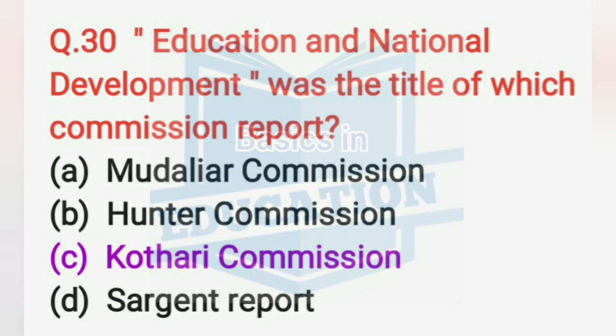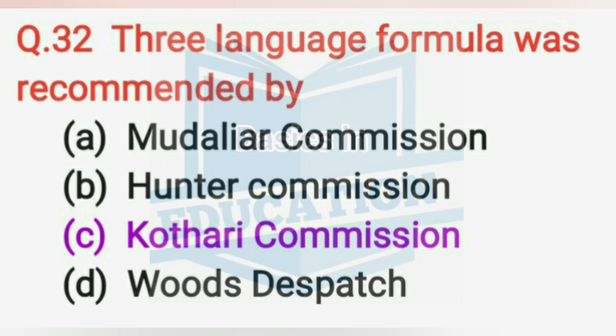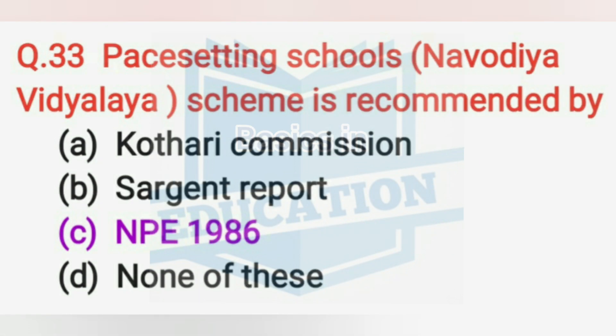'Education and National Development' was the title of the Kothari Commission report. The Secondary Commission was inaugurated on 6th October 1952 by Maulana Azad. The three-language formula and Pace-Setting Schools — the Navodaya Vidyalaya Scheme — were recommended by Kothari Commission and NPE 1986 respectively.